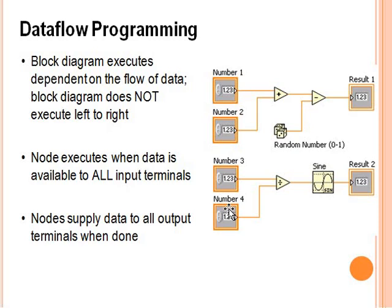What type of programming is LabVIEW? It is data flow programming. That means block by block will be executed. If one block is not executed, the output will not reach the other block and it will not give any output at all. It is sequential programming that depends on the flow of data. The block diagram does not execute left to right. Nodes execute when data is available from all input terminals. The value flows from left to right—there is data flow from left to right. Nodes supply data to output terminals when done.